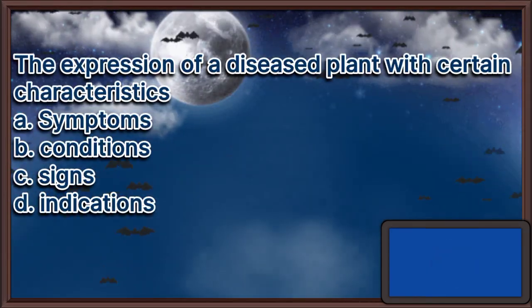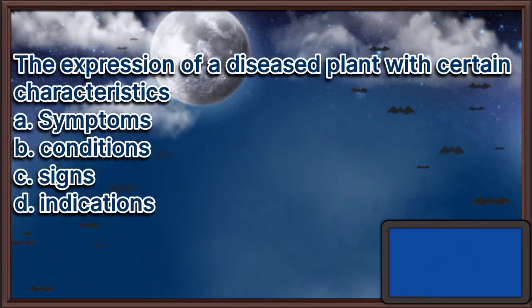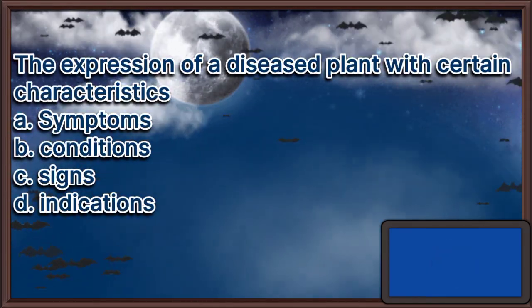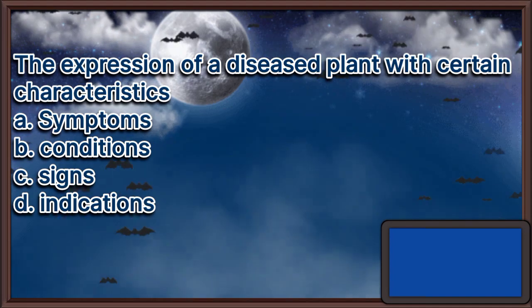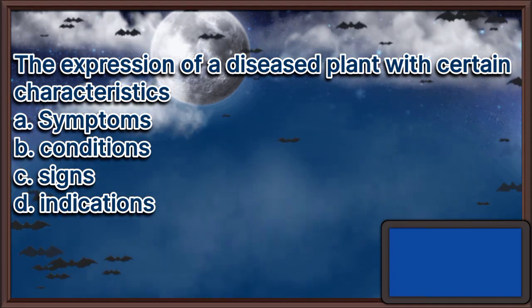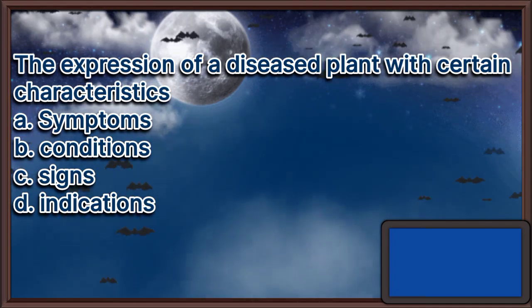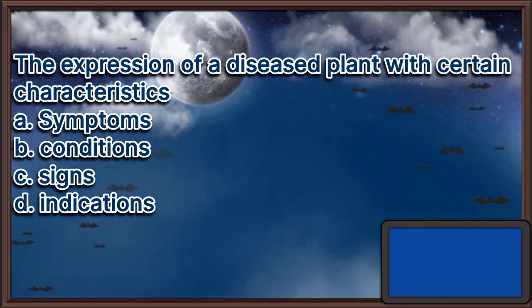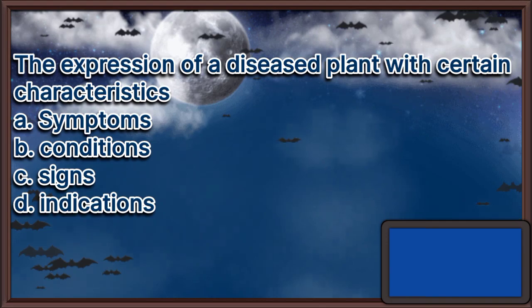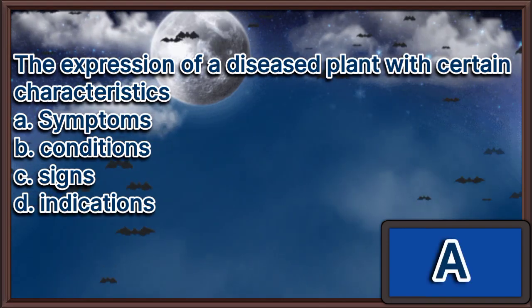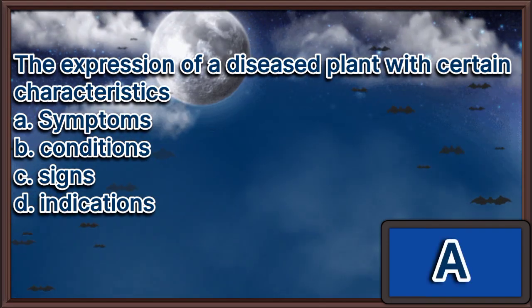The expression of a diseased plant with certain characteristics. A. Symptoms. B. Conditions. C. Signs. D. Indications. The answer is letter A.